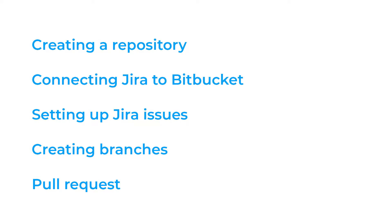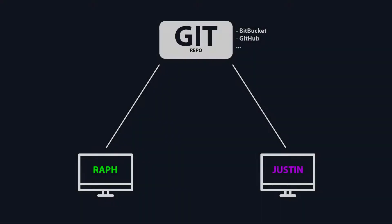In this video we're going to show you how to create a Bitbucket project, connect to Git using GitKraken or SourceTree, and then assign tasks or cards or issues in Jira and manage your Unity project.